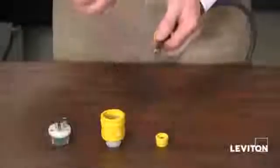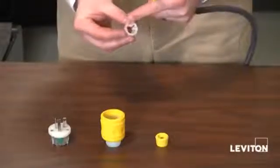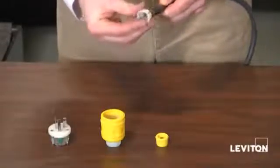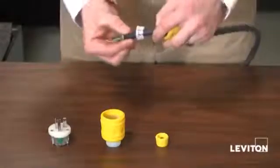Next, the strain relief washer. Here, you want to make sure that the circular piece is facing towards the end of the cord. Just like that.